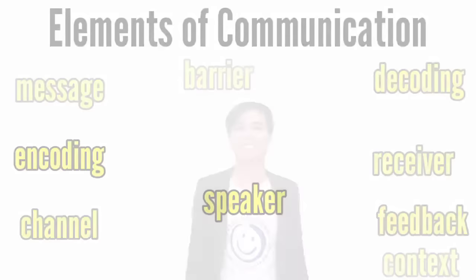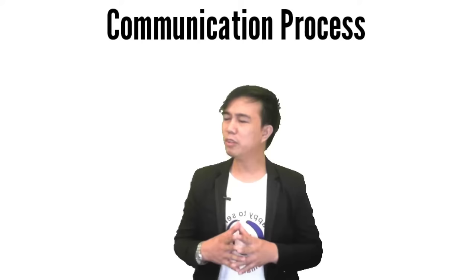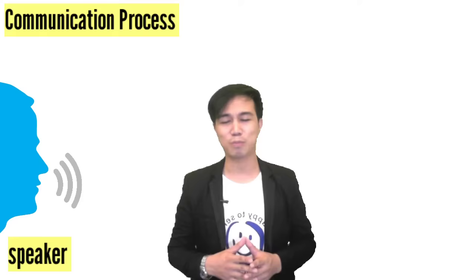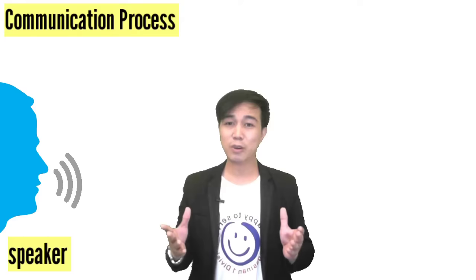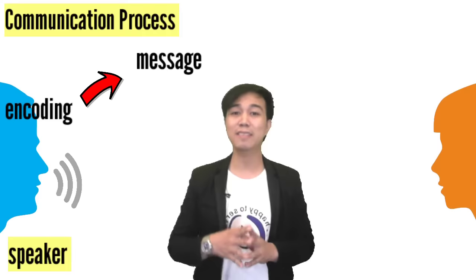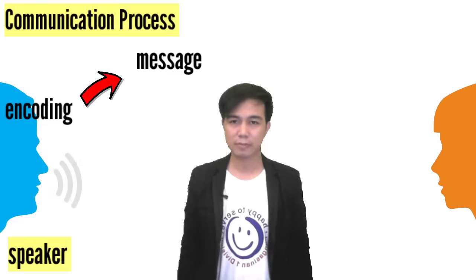Let me explain to you the process of communication. The process of communication begins with the speaker. The speaker is also known as the center of the message or information. The speaker initiates the process of communication with a specific purpose. The speaker encodes by converting messages into actions or words or other forms wherein the speaker and the listener understand. The message is simply the information, thoughts, or ideas conveyed by the speaker into words or in actions.